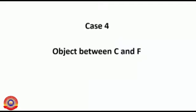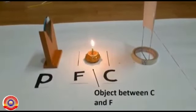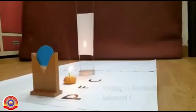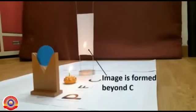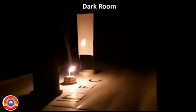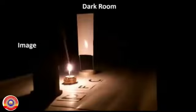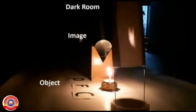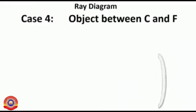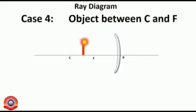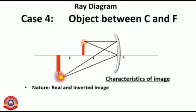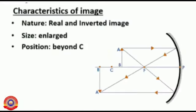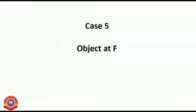Next, the object is placed between C and F. The image is formed beyond C. How to draw the ray diagram? A real, inverted, and magnified image is formed and it is formed beyond C.